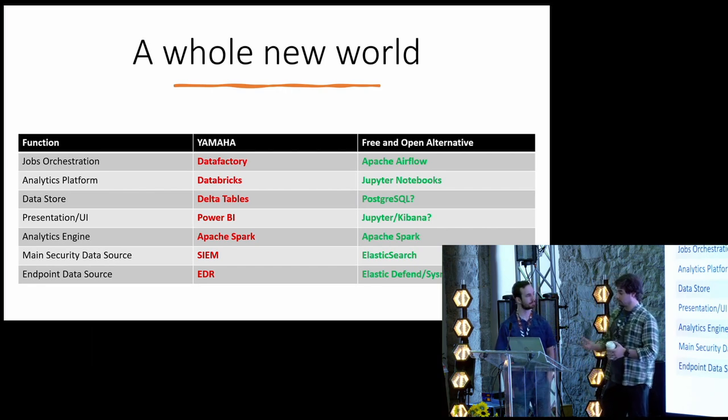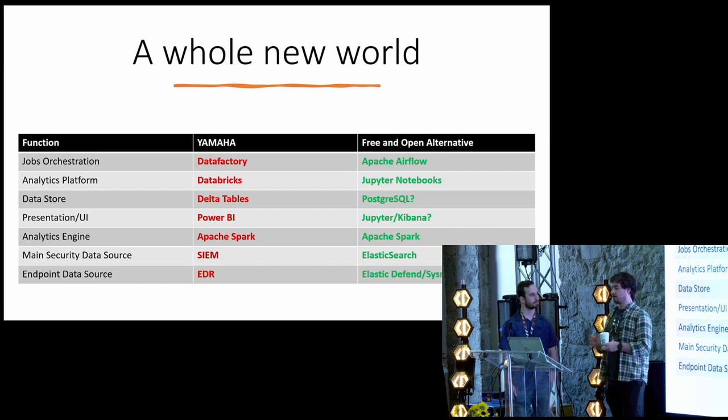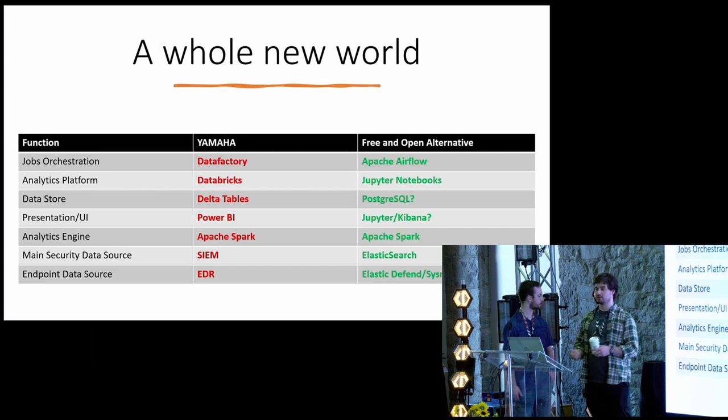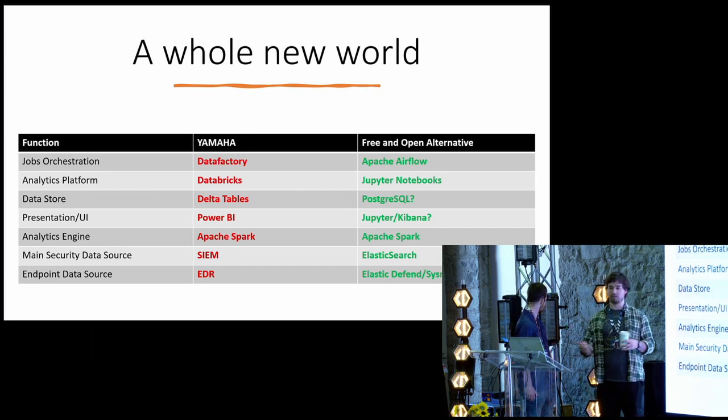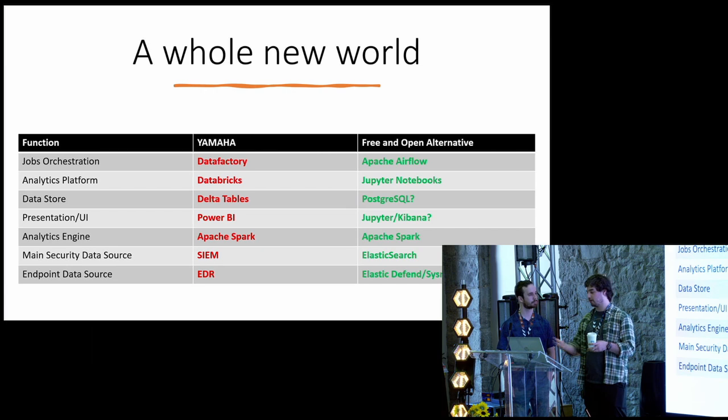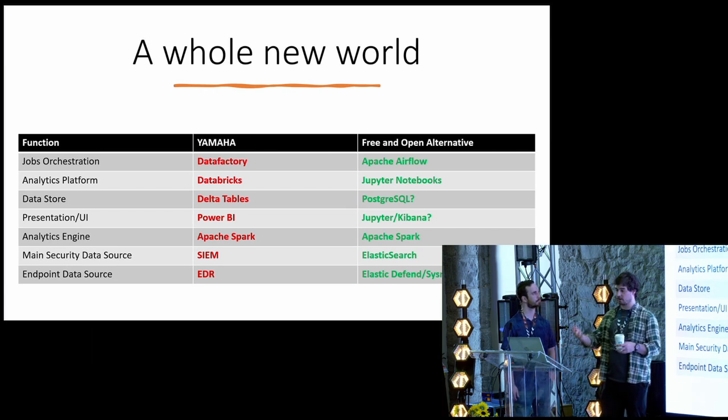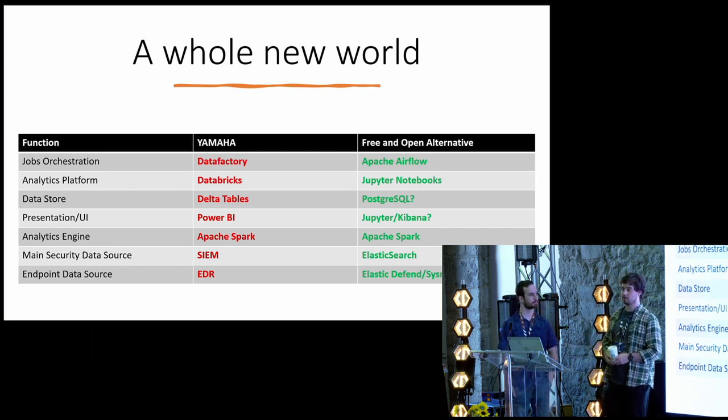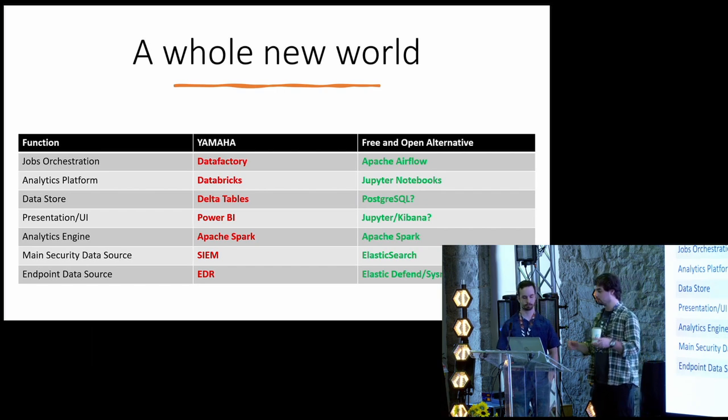For the data store, we use Delta tables. It is also free and open. I just didn't put it in there. But you can use like a PostgreSQL or a file system, whatever you want that the analytic engine can parse, which for instance is Apache Spark. And it is also free and open. So yeah, and for the presentation UI, we use Power BI as you saw, but I don't think there's anything that matches Power BI in the free and open world. So you might just use Jupyter notebooks with IPython widgets and some graphing libraries or Kibana from the Elastic Stack. And you need data source, so we use a SIEM and an EDR, but in the Elastic Stack you have also Elasticsearch and ElasticDefend that is built in and maybe Sysmon or Auditd for Linux, and you should be able to get going and do some of this stuff.